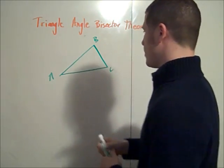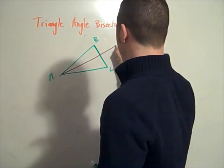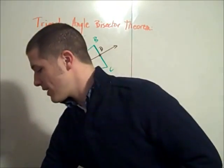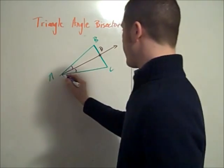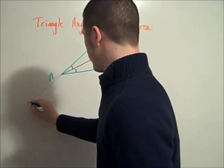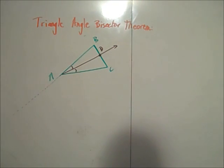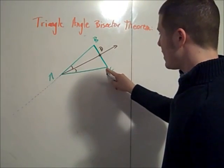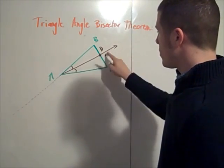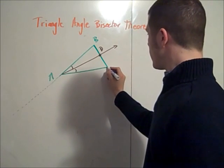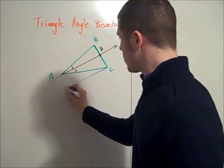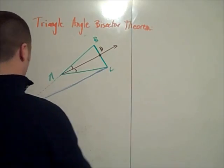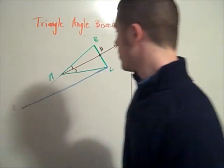And again, we'll look at our angle bisector. So what we do is we think about extending AB a bit further, and then constructing the parallel through C parallel to AD. So let's call this point E.